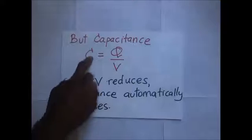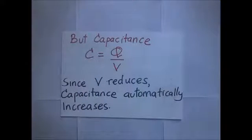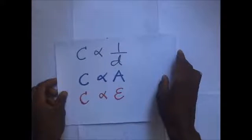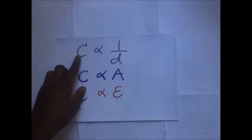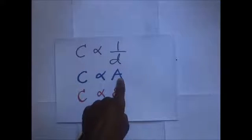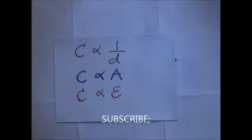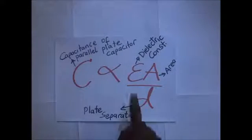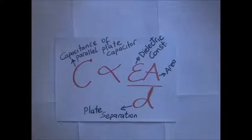Introducing a dielectric between the plates of a parallel plate capacitor increases the capacitance. The three factors bring us to this overall relationship: the capacitance of a parallel plate capacitor is inversely proportional to the distance between the plates, directly proportional to the area of overlap between the plates, and directly proportional to the permittivity of the dielectric introduced between them. These are the three factors — the dielectric constant, the area, and the plate separation.